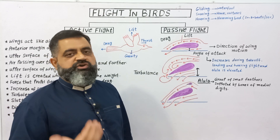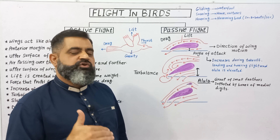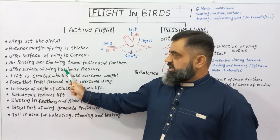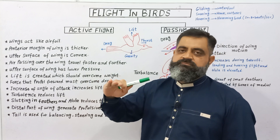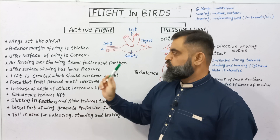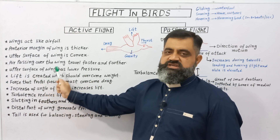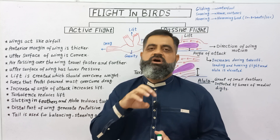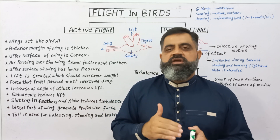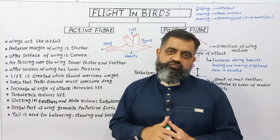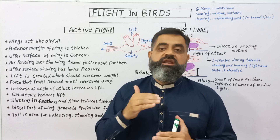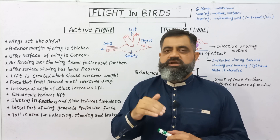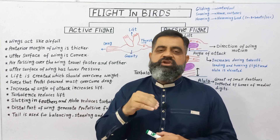This lift acts against the force of gravity, which helps birds to move away from the earth's gravity. The upper surface of the wing has lower pressure because air passes faster, while the lower surface has higher pressure. Lift is created as a result of this pressure gradient, and this lift must always overcome the weight of the bird. If the lift is smaller than the weight of the bird, the bird is unable to fly. So the force created by the wings must be greater than the weight of the body.